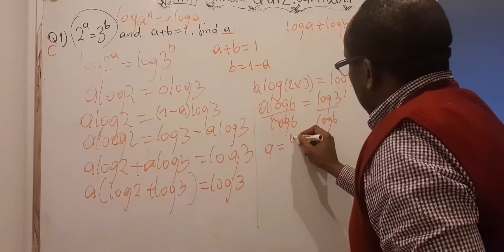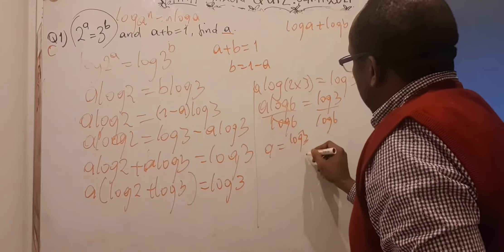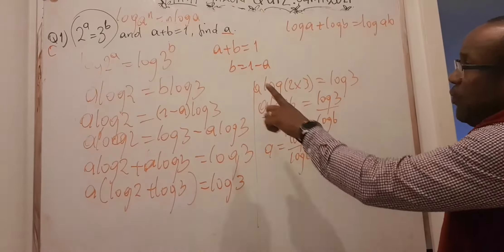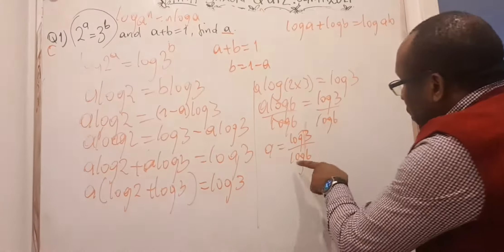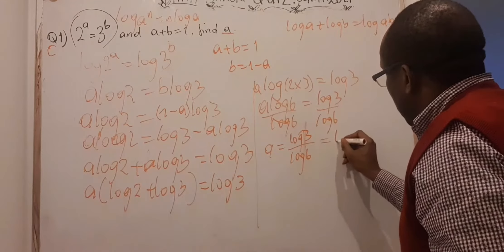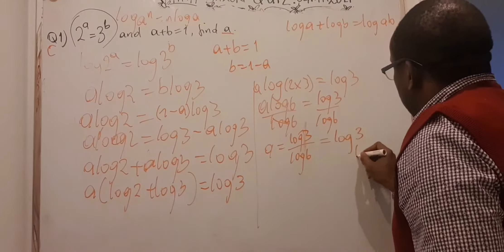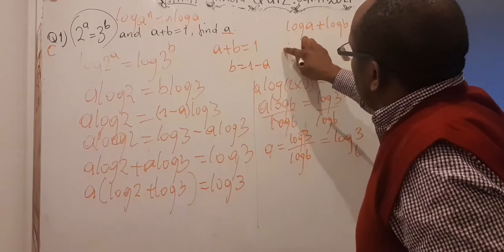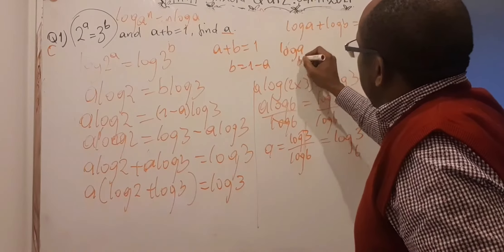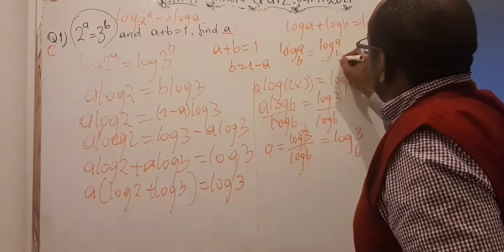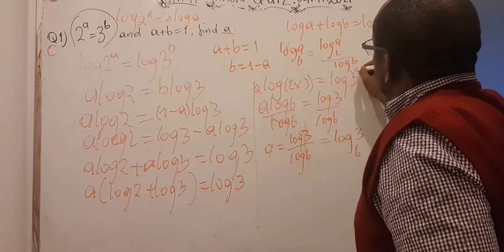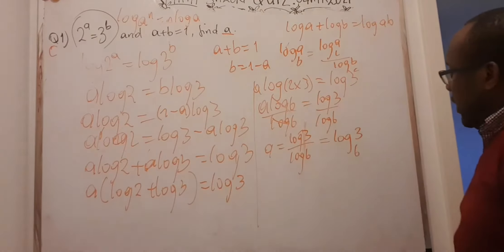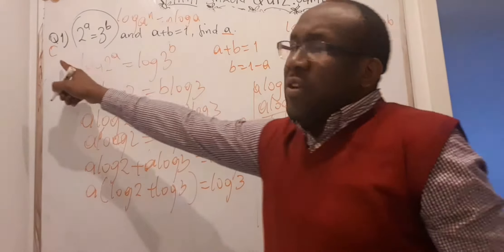But if you check through the answers, you would not find something written like that. So there was a change of log base — this was supposed to be given as log base 6 of 3. You would have also learned that log_b(a) = log_c(a) / log_c(b), so I can move from one form to the other. So if you did that well, the answer was supposed to be C.